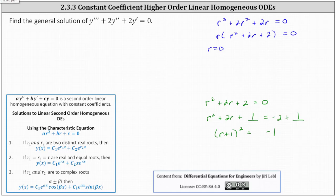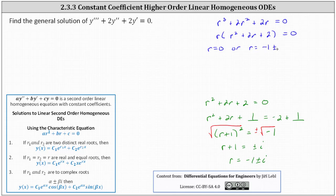Now we square root both sides of the equation to undo the squaring, including a plus or minus on the right to get both solutions. We have r plus 1 equals plus or minus i, since the square root of negative 1 is i. Subtracting 1 on both sides gives us r equals negative 1 plus or minus i as the two remaining complex roots. So we have r equals 0, or r equals negative 1 plus or minus i.